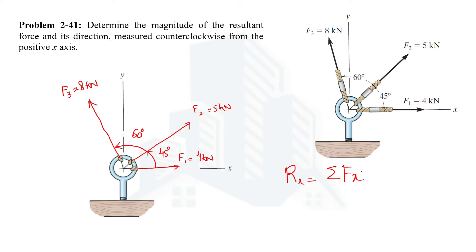Since F1 is directed along the x-axis, its x-component equals 4 kilonewtons. Taking rightward forces as positive, this gives +4. The x-component of F2 is also positive and equals 5 cos 45°.